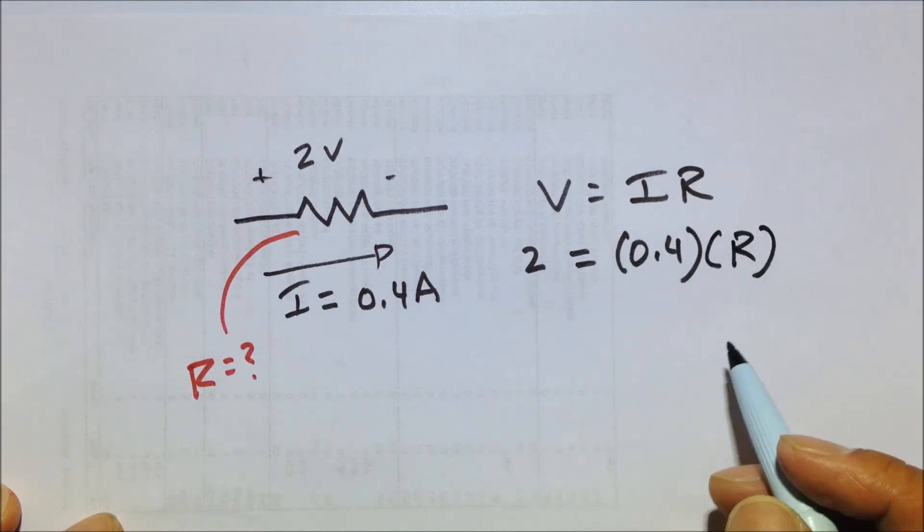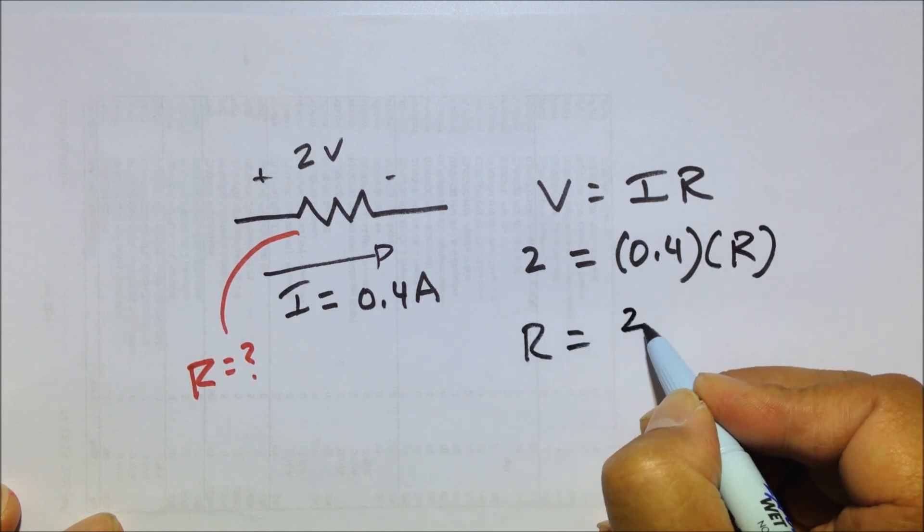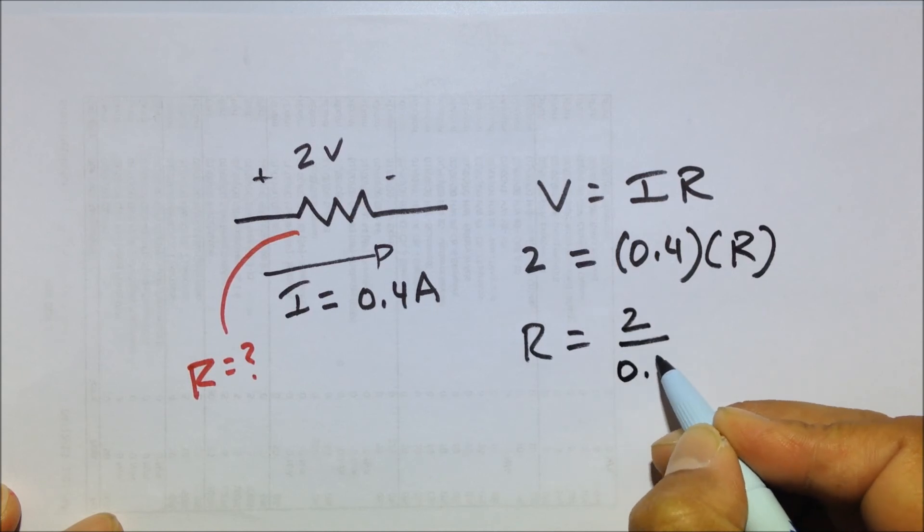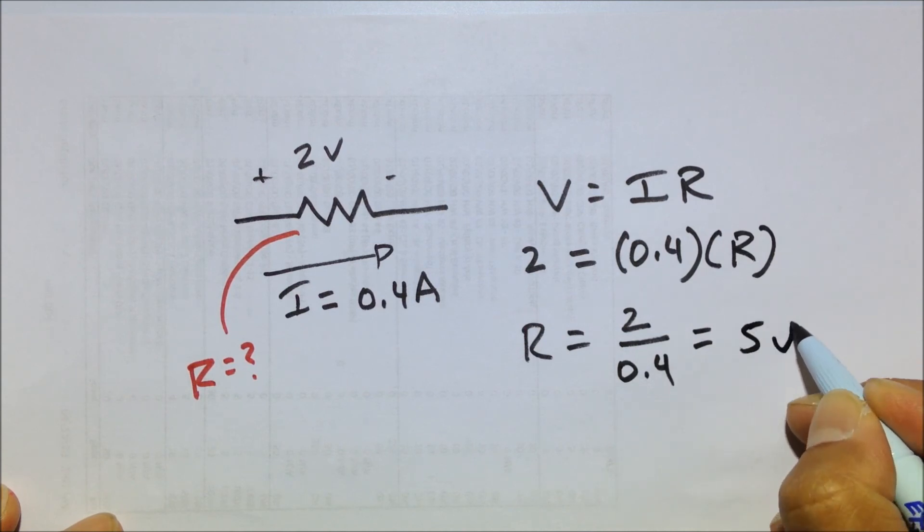Okay, now again, some basic algebra, we're going to isolate R on one side, and we have R equals 2 divided by 0.4. Plug that into your calculator, or if you can do that, go ahead and do that in your head. That's going to be 5 ohms.